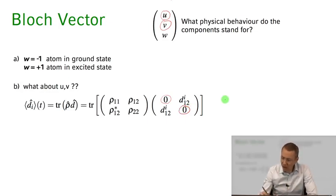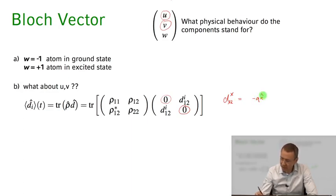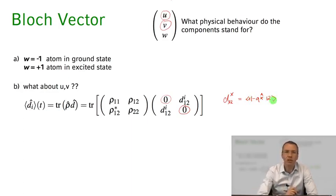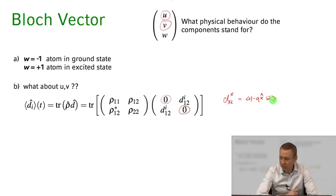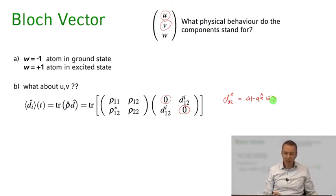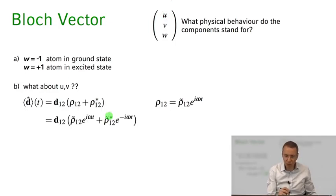The matrix element d₁₂ᵢ — for example the x component — is just given by minus q times the expectation value of the x operator between states 1 and 2, which is an atomic physics property of our two-level atom. When we multiply this out, we find that the only terms that survive are the off-diagonal terms ρ₁₂ and ρ₁₂*.